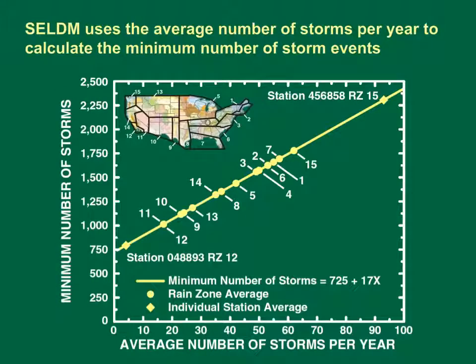SELDM uses the average number of storms per year to calculate the minimum number of runoff-producing storm events to be generated. This graph shows the linear equation used to calculate the minimum number of storms, with data points for each U.S. EPA rain zone and for the station with the minimum and maximum number of storms per year. The vertical axis shows the calculated minimum number of storms in a simulation, and the horizontal axis shows the average number of runoff-producing storm events per year. The minimum number of events to be generated is calculated as 725 storms plus 17 times the average number of storms per year. These coefficients were selected to balance the need for a sufficient number of storms to reach convergence towards input statistics and the desire to generate a period comparable to the length of record for streamflow and precipitation datasets in most of the country.